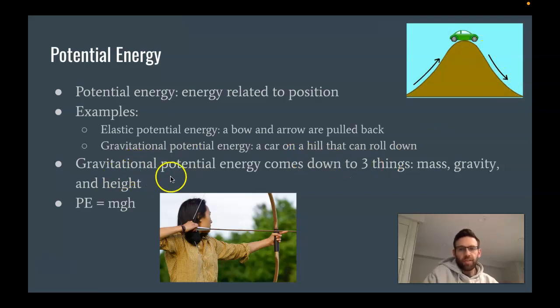And gravitational potential energy comes down to three things: mass, gravity, and height. So when you look at this equation, you basically just have to multiply your mass times your gravity times your height to get the potential energy of an object.